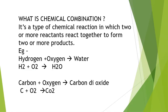The first chemical reaction is combination. It is a type of chemical reaction in which two or more reactants react together to form two or more products. Combination means combining. The first example: hydrogen reacts with oxygen — both elements are combining to form a compound, namely water. So H₂ plus O₂ gives H₂O.